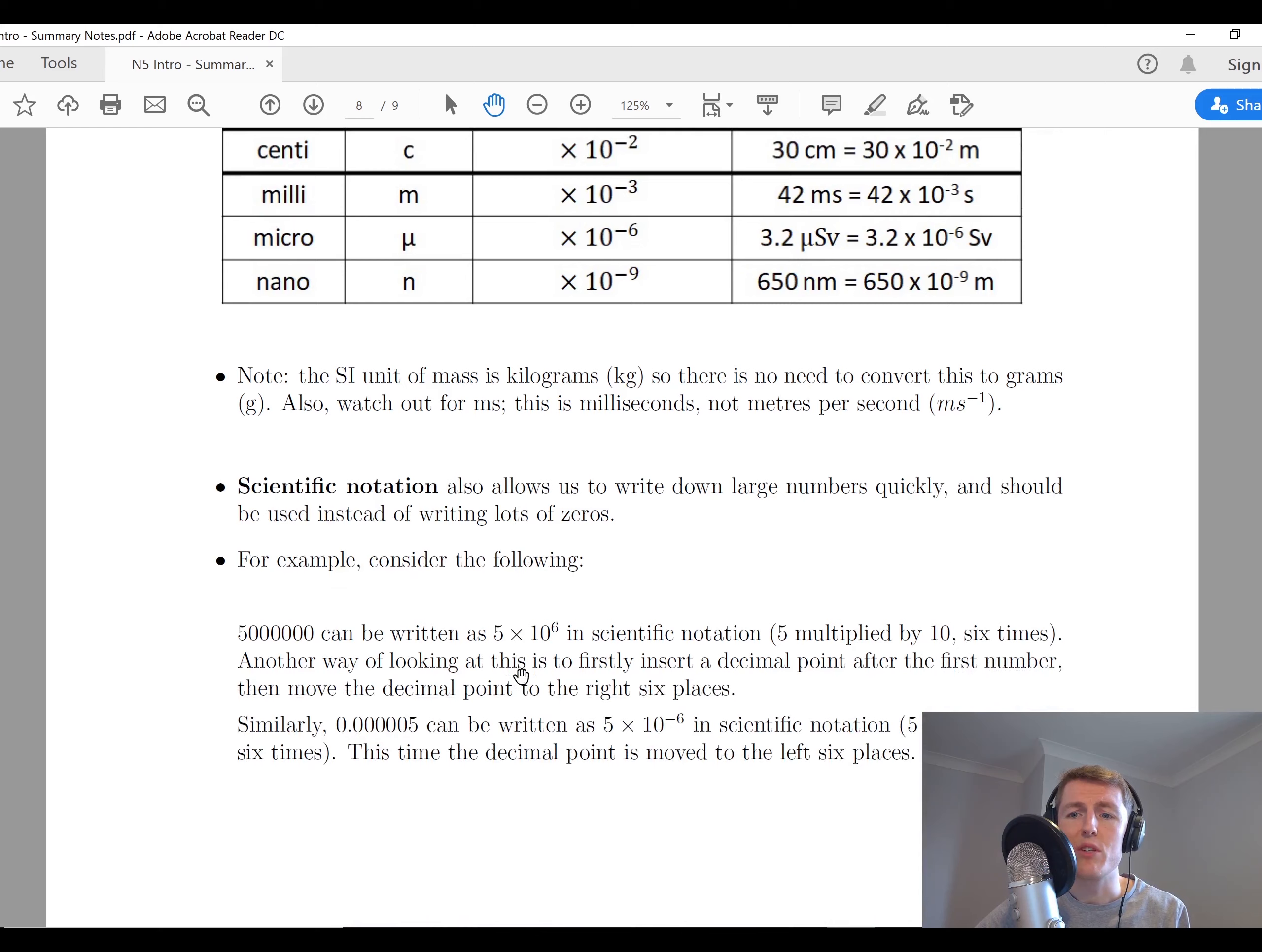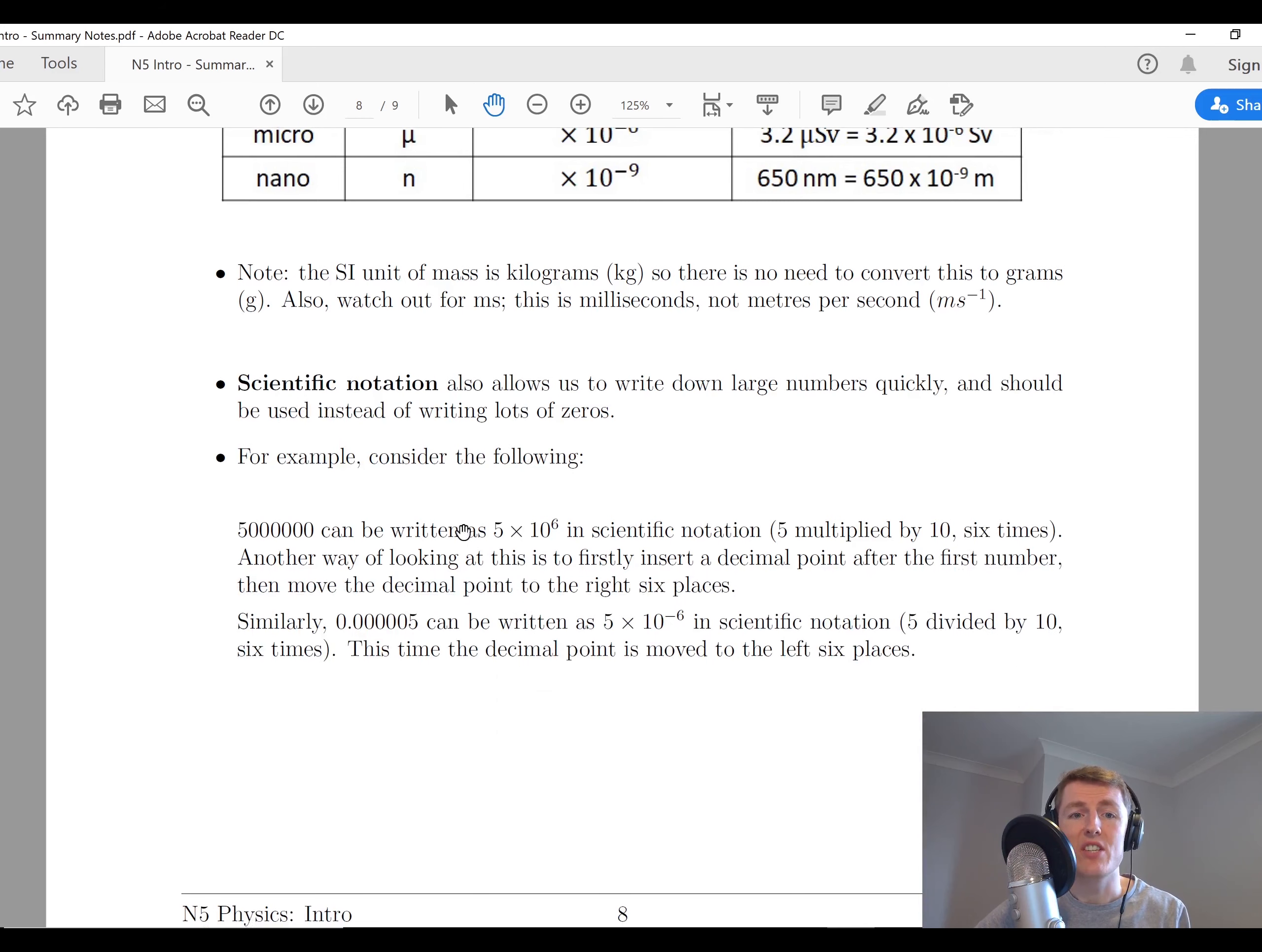Lastly, just a note on scientific notation, which is something again that you'll be used to. Scientific notation allows us to write down large numbers quickly and should be used instead of writing lots of zeros down. We don't want to see final answers that have hundreds of zeros in them, because that's not really useful to anyone. It's easy to see at a glance if you've written down a number with scientific notation or with a prefix. As an example, if you wanted to write down this number here, which is 5 million, so there's six zeros there, this can be written in scientific notation as 5 times 10 to the power of 6, which is 5 multiplied by 10 six times. Another way of looking at this is to firstly insert the decimal point just after the first number, and then count how many places to the right we move, and you'll see that we move six places to the right.